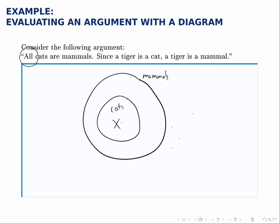Well, the fact that this tiger is inside the circle of cats means that it has to be within the circle of mammals, because the circle of cats is completely contained in that outer circle.